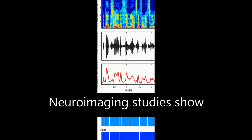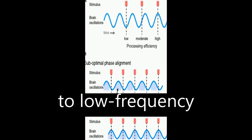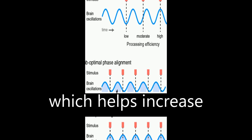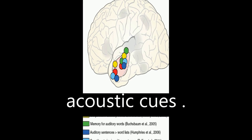Neuroimaging studies show that ongoing cortical oscillations phase lock to low-frequency information, 4 to 8 hertz, in the speech envelope, which helps increase sensitivity to relevant acoustic cues.